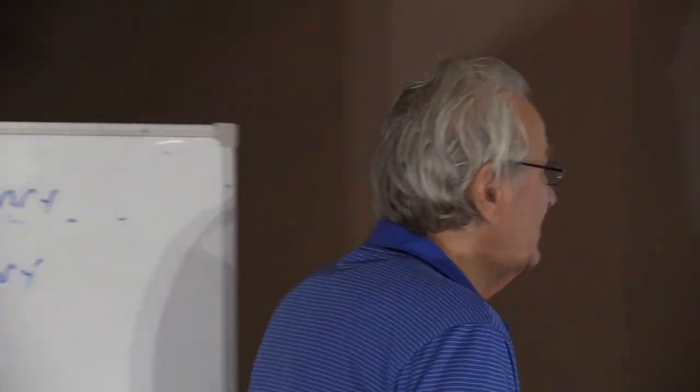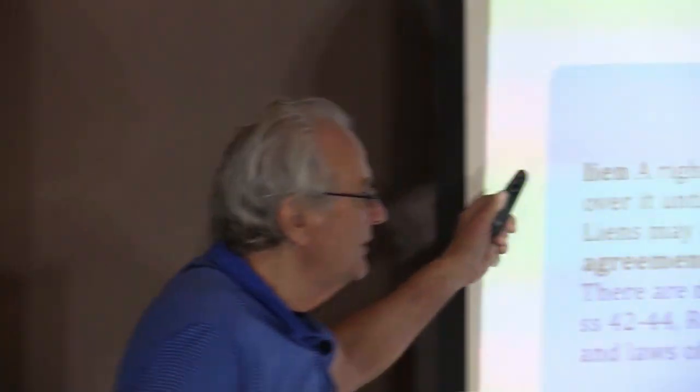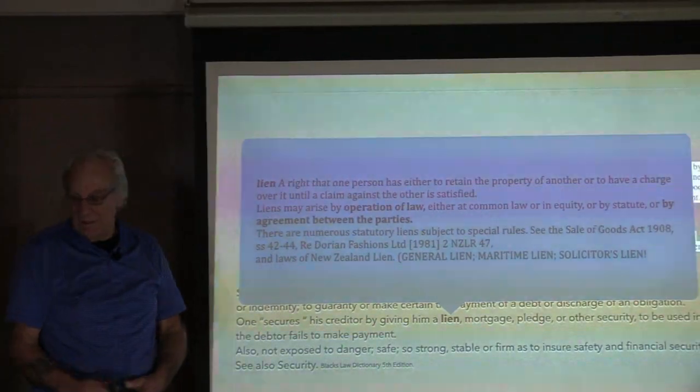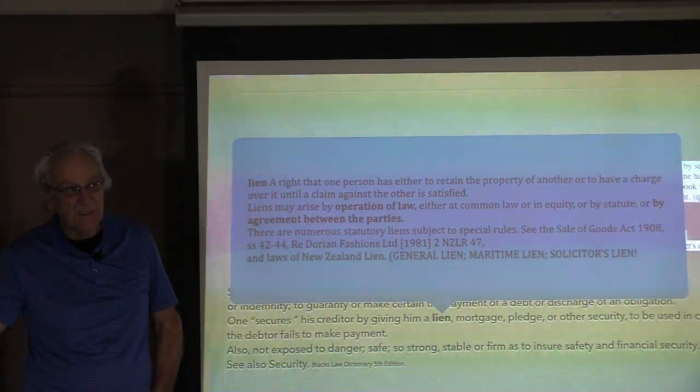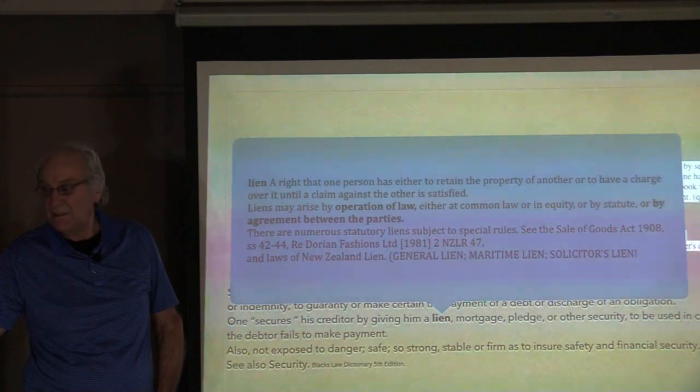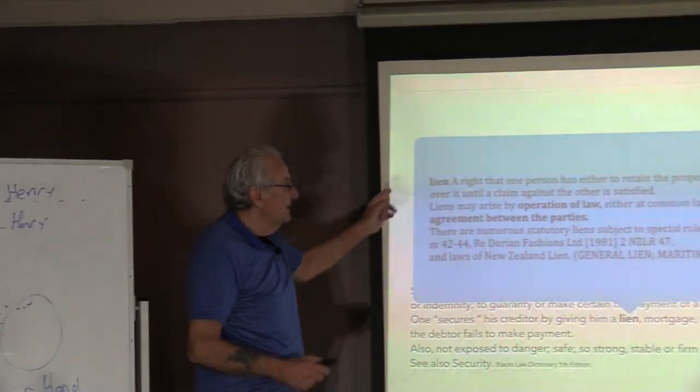Lien: a right that one person has either to retain the property of another. They have the right to retain that property if we don't put a lien on it — or to have a charge over it. That's your rights. They've got a charge over that property. And you are the surety for it. Liens may arise by operation of law, either at common law or in equity or by statute or by agreement between the parties.